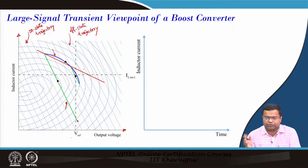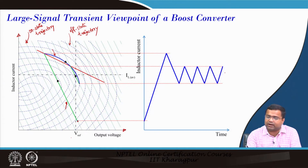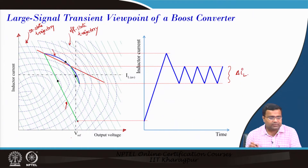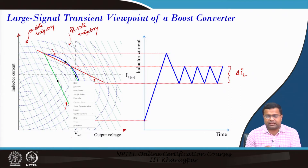If you draw the time-domain waveform, in one cycle it recovers and comes to steady state, and this is the inductor current ripple. This line is a first-order switching surface and it has a certain slope.